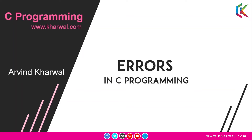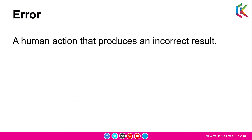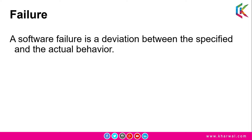Hello guys, I am Arvind and in this lecture I am going to discuss errors in C programming. The first topic is error — a human action that produces an incorrect result is known as an error. Moving on to the next topic, failure: a software failure is basically a deviation between the specified value and the actual value.